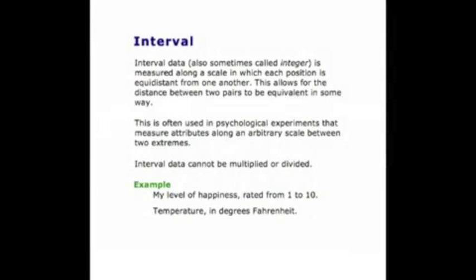The next layer of data is called interval, sometimes called integer, because these values have a methodology by which they are equally spaced. However, interval data — even though equally spaced — cannot meaningfully be divided, added, or multiplied. For instance, consider a scale on a thermometer: is 100 degrees really twice 50 degrees? Thermometer scales are interval data. Likert scales are generally not considered interval data because the spacing between respondents is not truly equal.